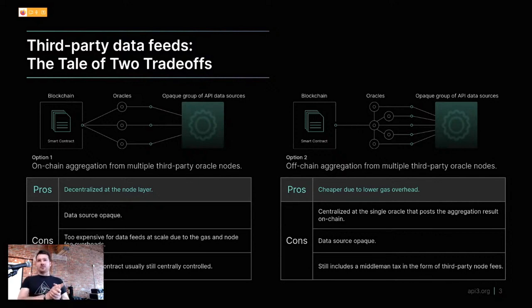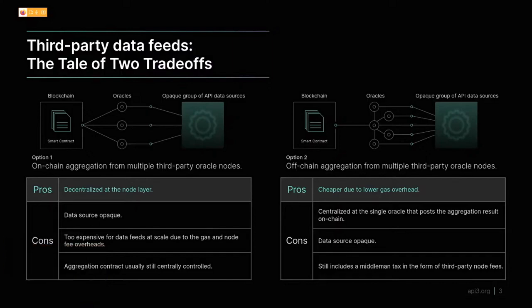The initial way data feeds were composed by third-party oracle projects was using on-chain aggregation. The advantage is that you can see exactly which nodes are posting on-chain and what values they're posting. The downside is it's still opaque — you can't see what sources they're using. It also scales poorly because aggregation is expensive to process on-chain, and there's the issue of who controls the aggregation contract. If an entity can add or remove nodes at will, you're effectively trusting them with your data.